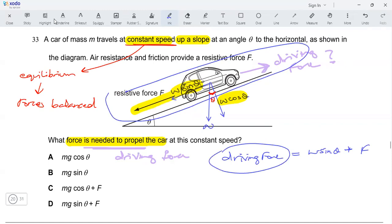Right, the driving force is up the slope, and w sine theta and F are down the slope. So the up forces are equal to the down forces. That's how the forces are balanced.